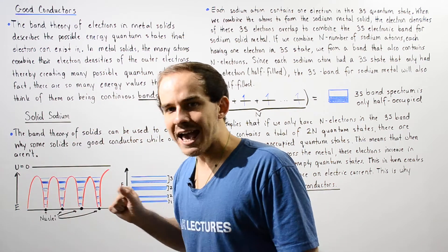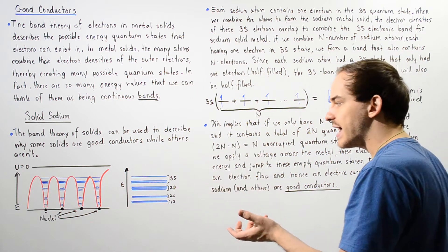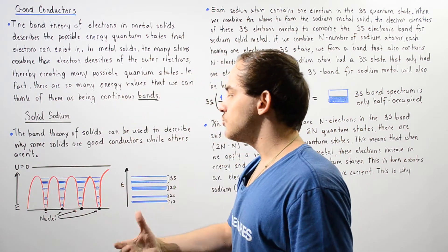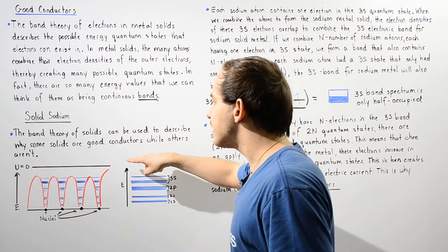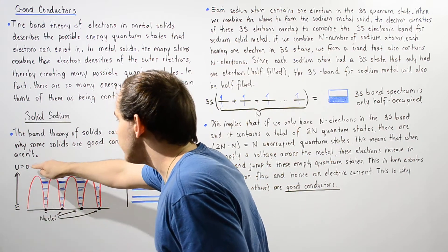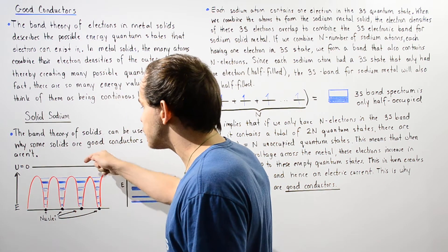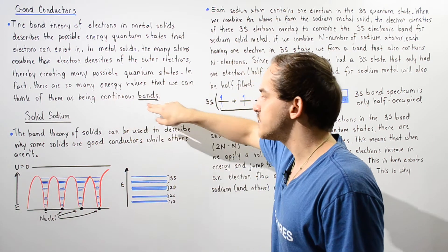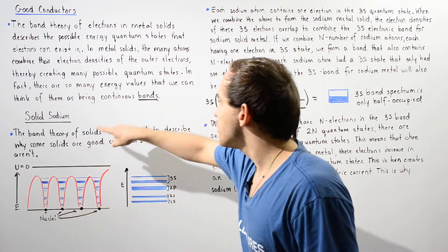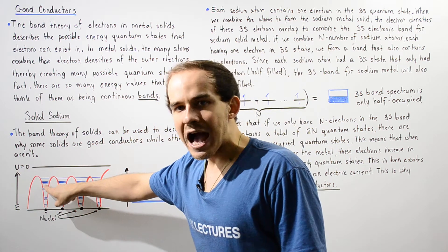The y-axis of the diagram gives us the energy and the x-axis shows our four nuclei — of course we have many more, but only four are shown to save space. As we go higher, energy increases; as we go lower, energy becomes more negative. The line at zero corresponds to zero potential energy. The red regions correspond to the potential well barriers, and the blue regions correspond to our continuous band. The lower region corresponds to electrons in the 1s state, followed by the 2s, 2p, and 3s quantum states.